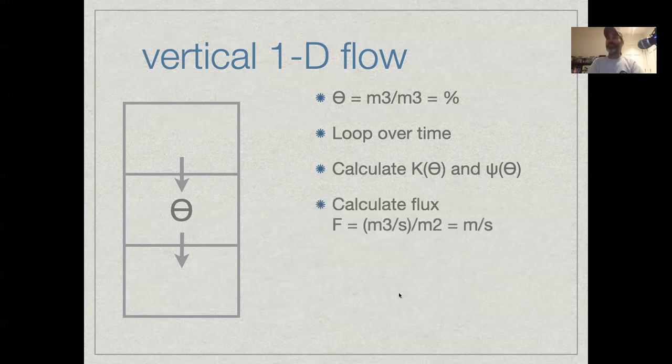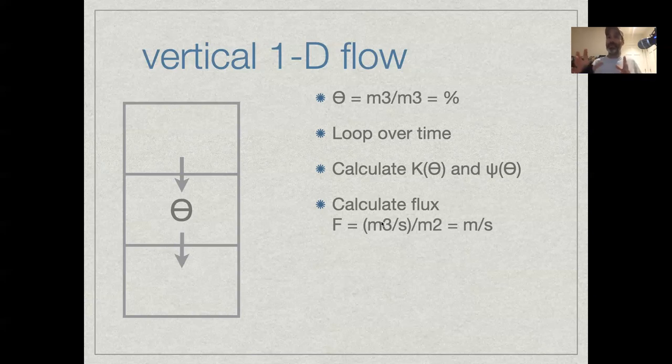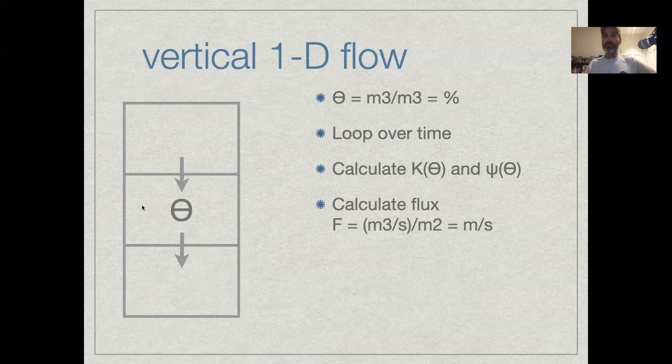We could then calculate what the flux would be. That's how much cubic meters of moisture are going to move per second per square meter of soil. So flux is going to end up having units of meters per second. You can think of it as a velocity that the water is moving downward through the soil, but it's really more like the velocity at which water is passing any particular reference point, the rate that it's moving.